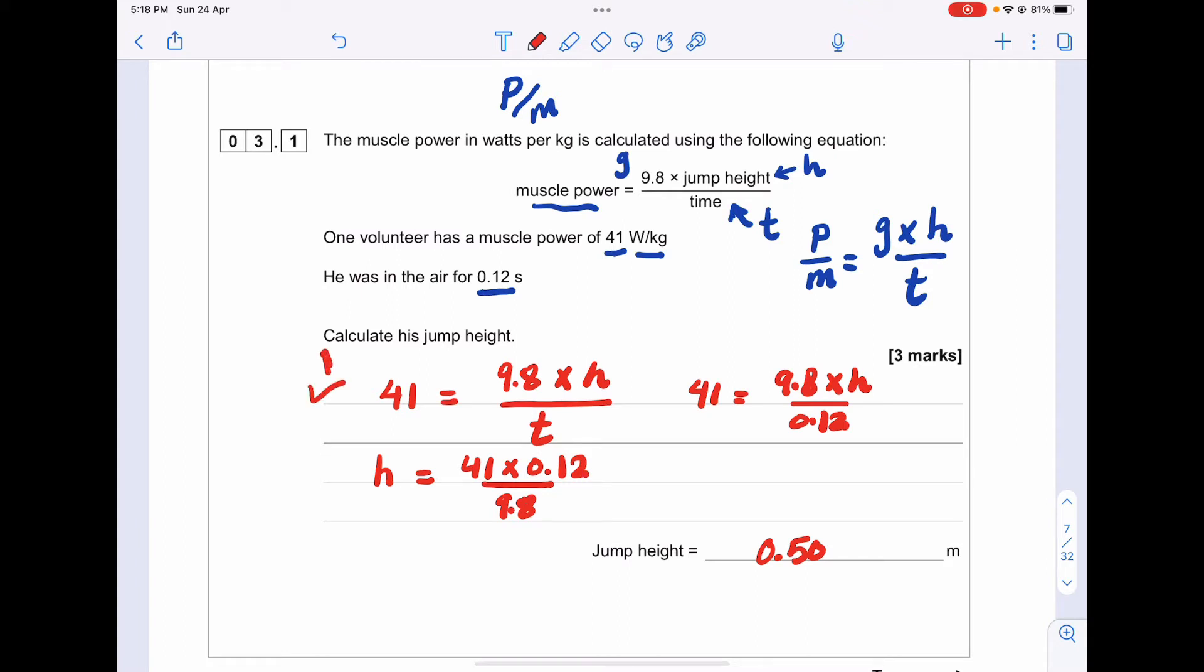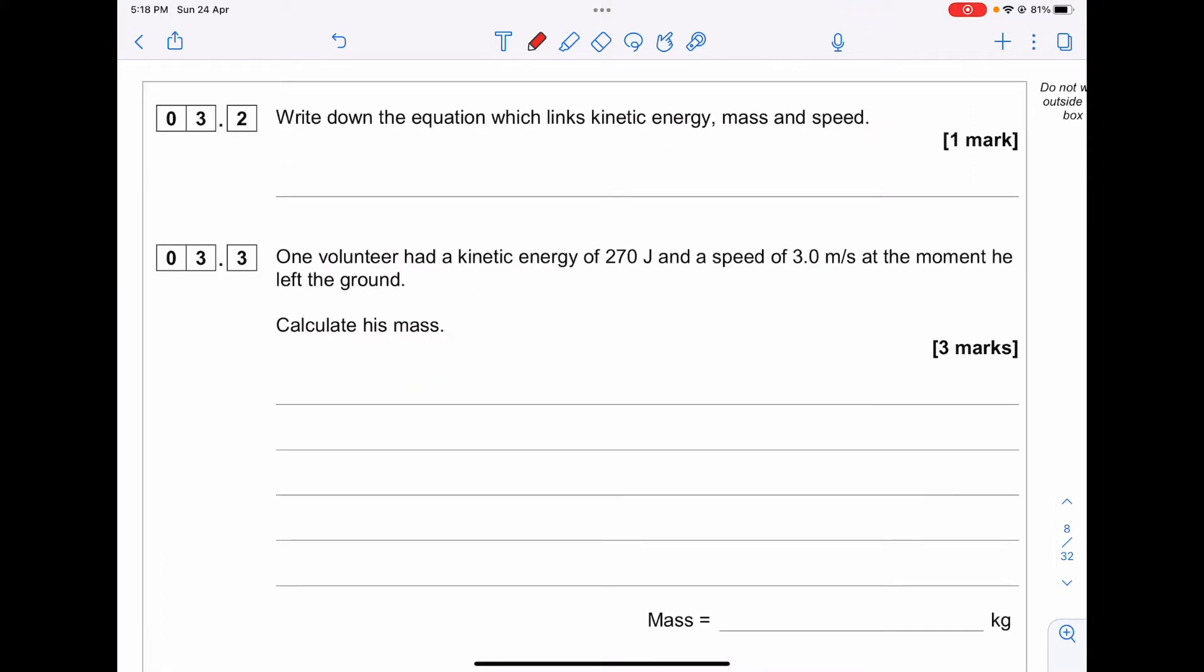Question 3.2: Write down the equation which links kinetic energy, mass and speed. The formula is kinetic energy equals half m times v squared.